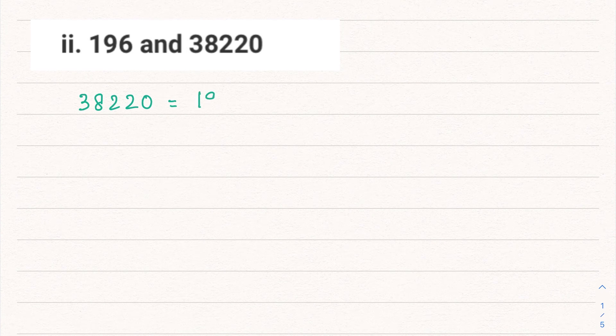Second part: 196 and 38,220. Here the bigger number is 38,220. We have to divide it by 196, so let's start with our division.